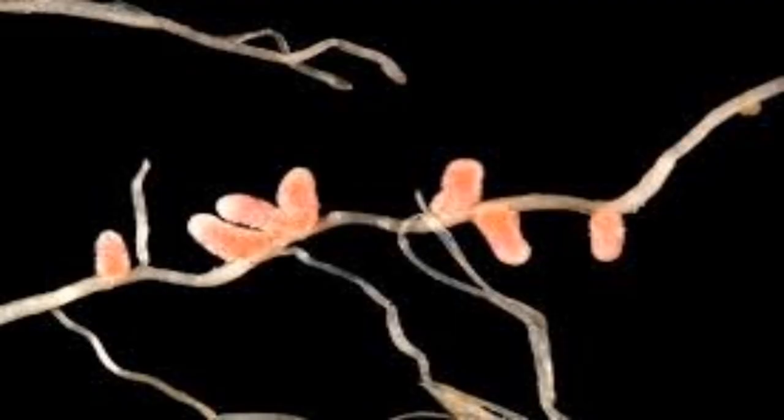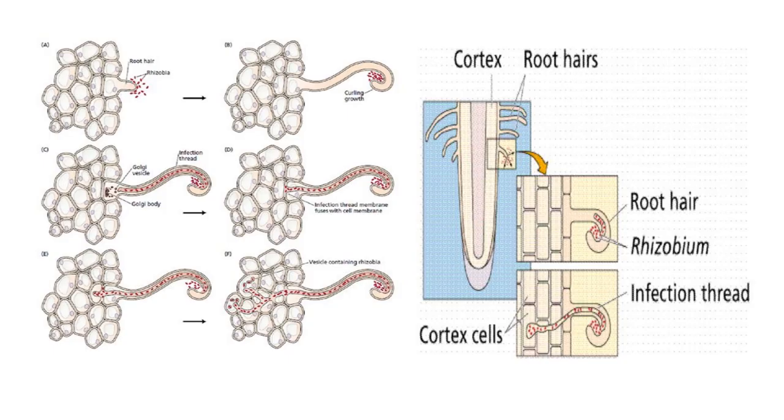Classification of Rhizobium: the Rhizobiaceae family has five important genera. Rhizobium — slow-growing rhizobia that produce acid. Bradyrhizobium — fast-growing rhizobia that produce alkali. Azorhizobium — which induces both stem and root nodules. Next is Sinorhizobium, and the final one is Photorhizobium.